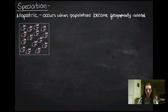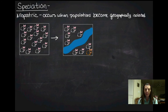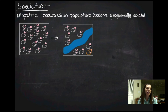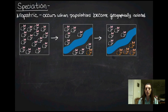Consider a population of bunnies. A river flows through the population, dividing them. If in the southern population a mutation arose through random chance and gave those bunnies an allele for brown coloring, that allele could either spread or not — we'll assume it spreads. If we end up with brown bunnies south of the river and white bunnies north of the river, there's a chance that speciation has occurred.